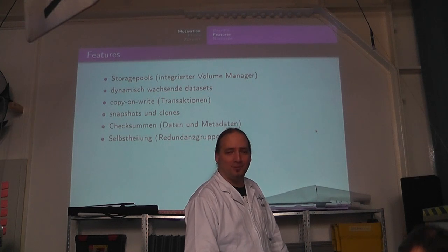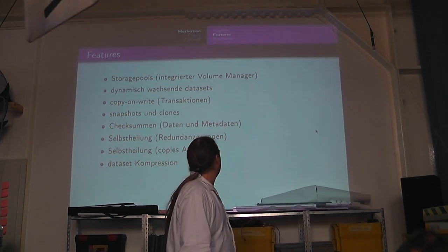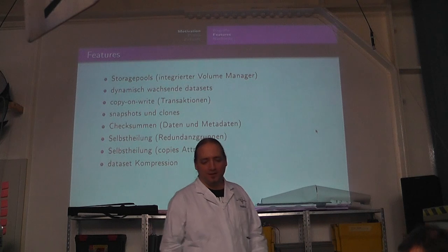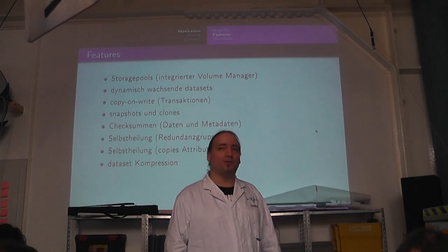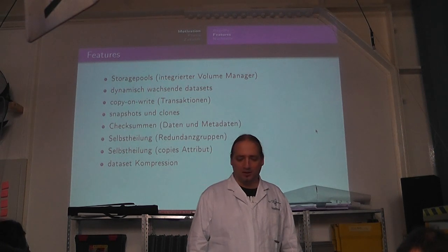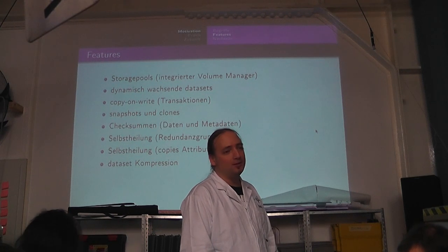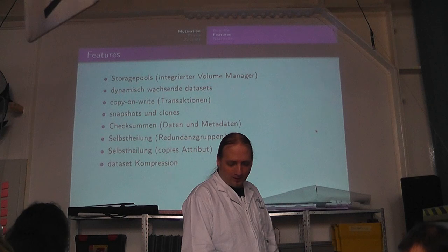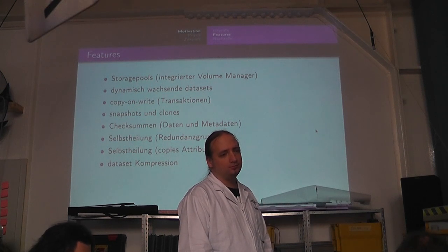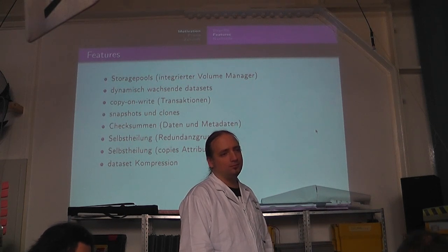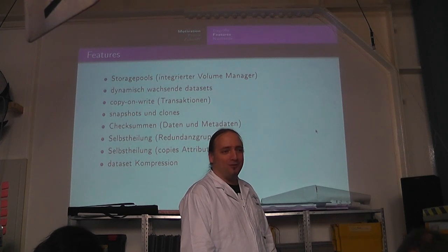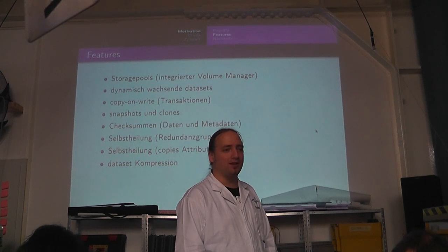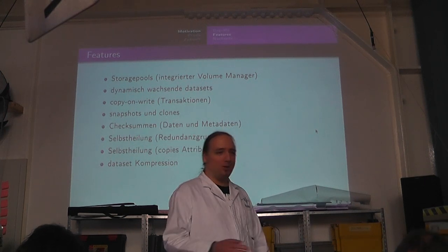Das habe ich bei mir in meinem Laptop natürlich nicht – da ist bloß eine Festplatte drin, logisch. Es gibt aber auch noch so eine Selbstheilung für Arme. Man kann ein Copies-Attribut auf ein Dataset setzen und sagen, ich habe zwar nur eine Festplatte, aber speichere doch bitte alles, was ich jetzt in dieses Dataset reinschreibe, dreimal ab. Am besten ein bisschen verteilt auf der Platte. Und wenn eine Version davon kaputt geht, dann habe ich noch zwei andere und kann es wieder herstellen. Das Setzen des Properties ist einfach – also ich habe ein paar Beispiele noch abgetippert. Es ist aber so, dass dieses Mehrfachspeichern erst für neu geschriebene Daten eintritt. Also das Beste wäre, ein neues Dataset zu erstellen mit dem Attribut, da rein kopieren.